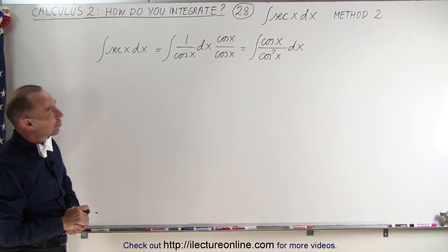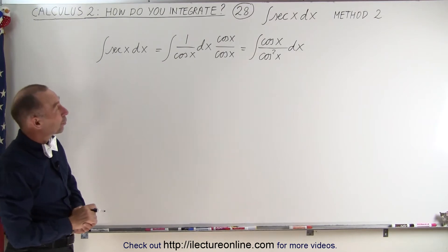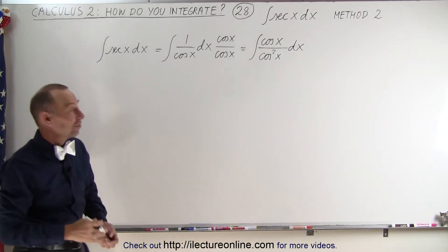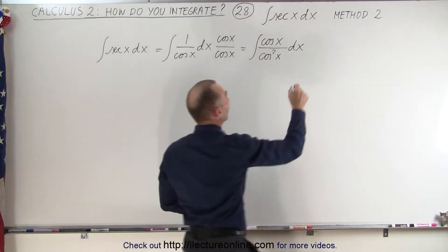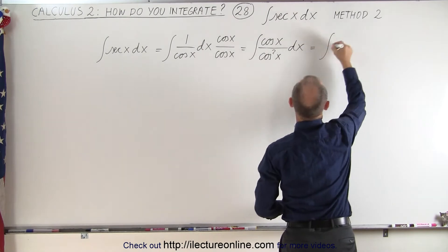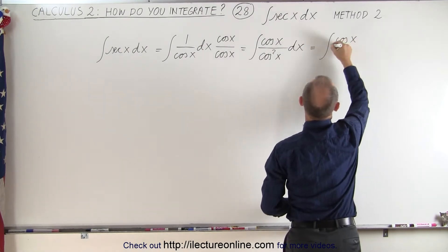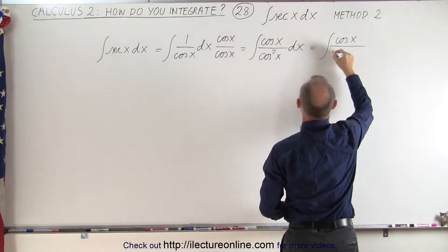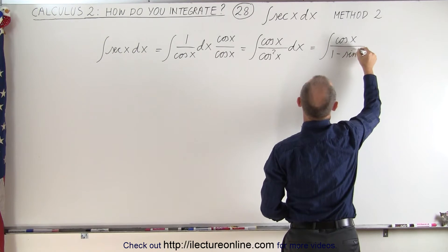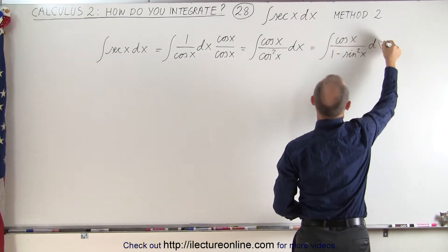Now we're going to write cosine squared of x as 1 minus sine squared of x. So this is equal to the integral of cosine of x divided by 1 minus sine squared of x, dx.